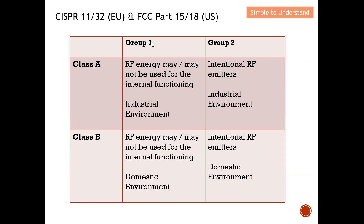In short: Group 1 devices don't release electromagnetic waves in order to work; Group 2 devices do release electromagnetic waves in order to work. Class A is mainly used for industrial environments; Class B is mainly used for domestic environments. With this, I'd like to end my discussion. Please like and subscribe. Thank you so much for the strong support — I hope to see you soon. Bye for now.